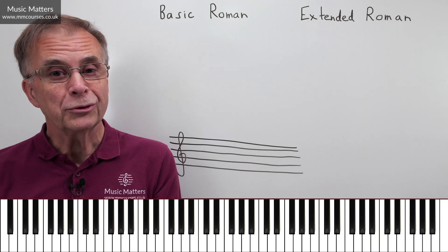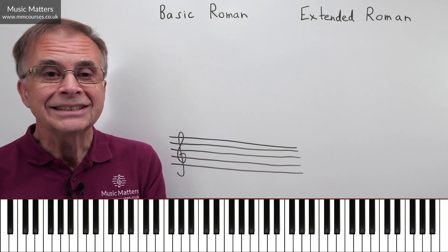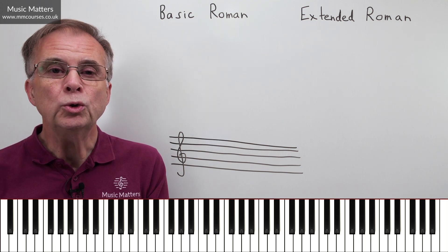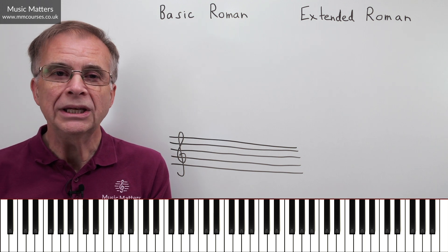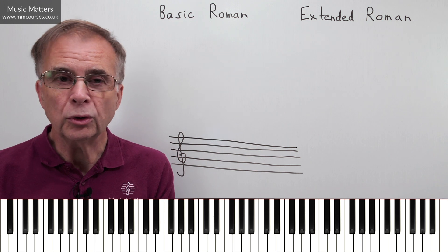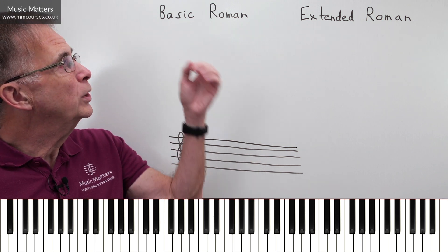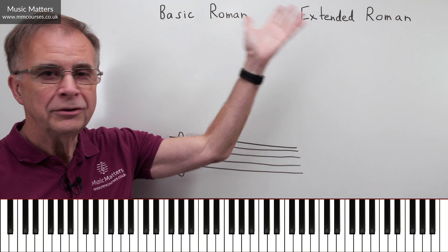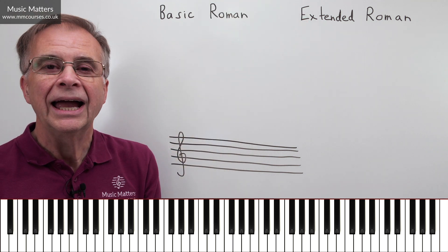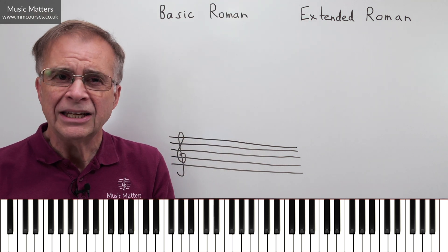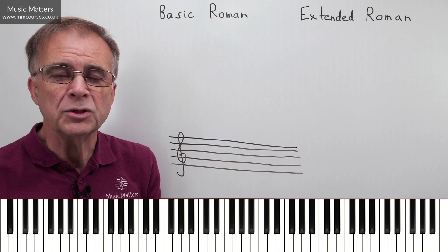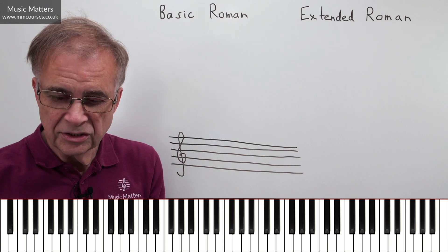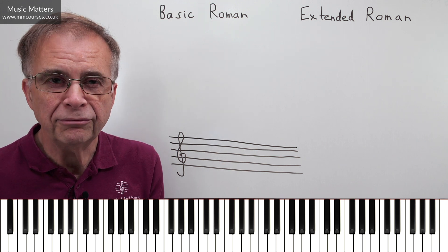Hi, I'm Gareth Green, and in this video we're going to think about the two ways in which we label chords. There are two systems: one is called Basic Roman, and the other is called Extended Roman. It's just good to understand the difference between the two, because it's a subject that causes some confusion.